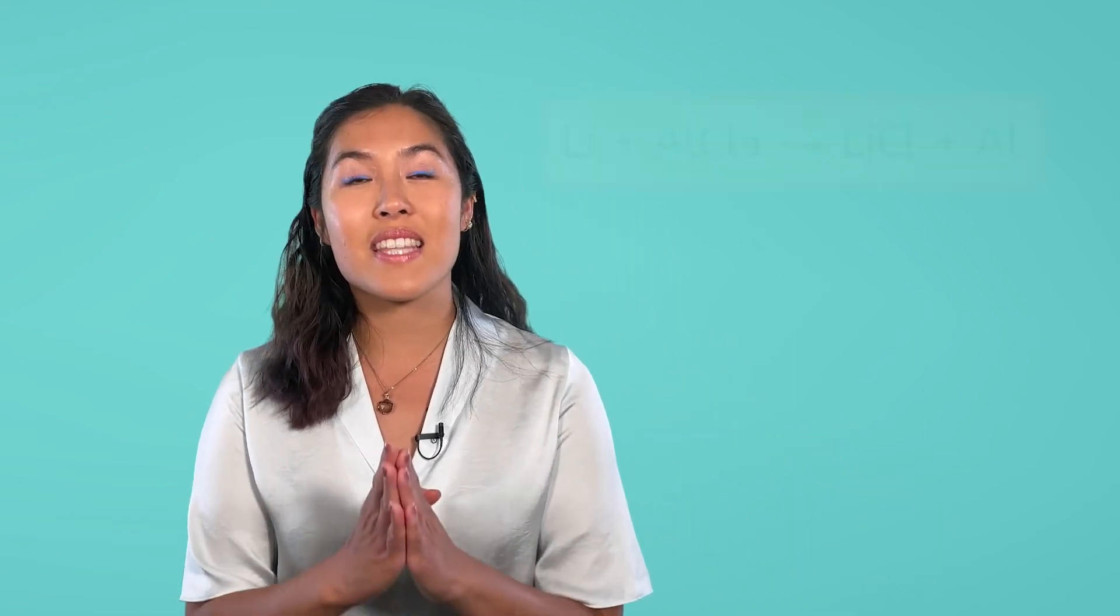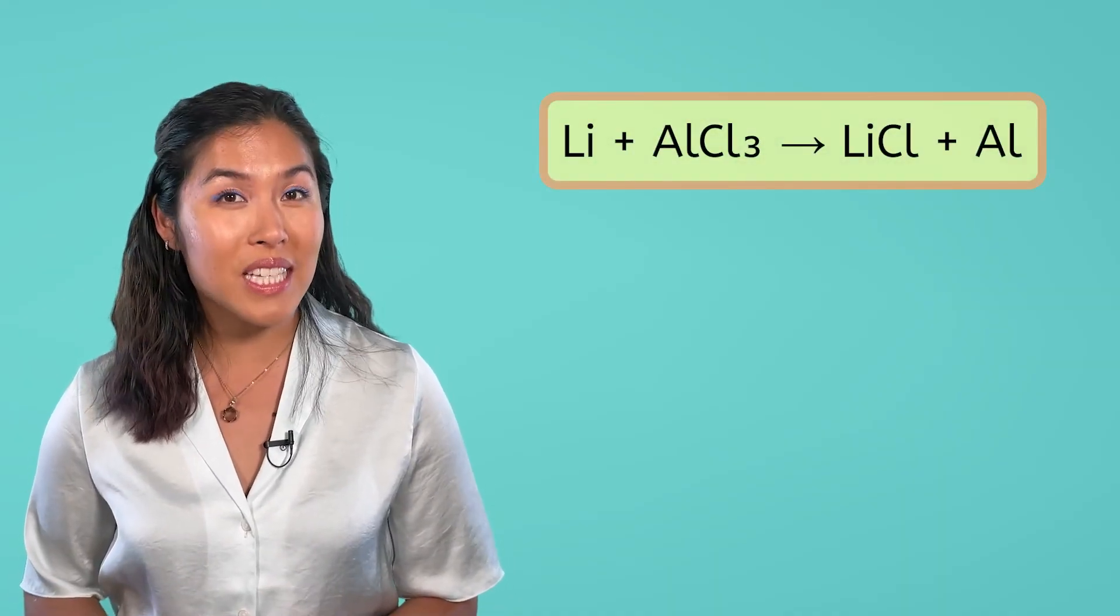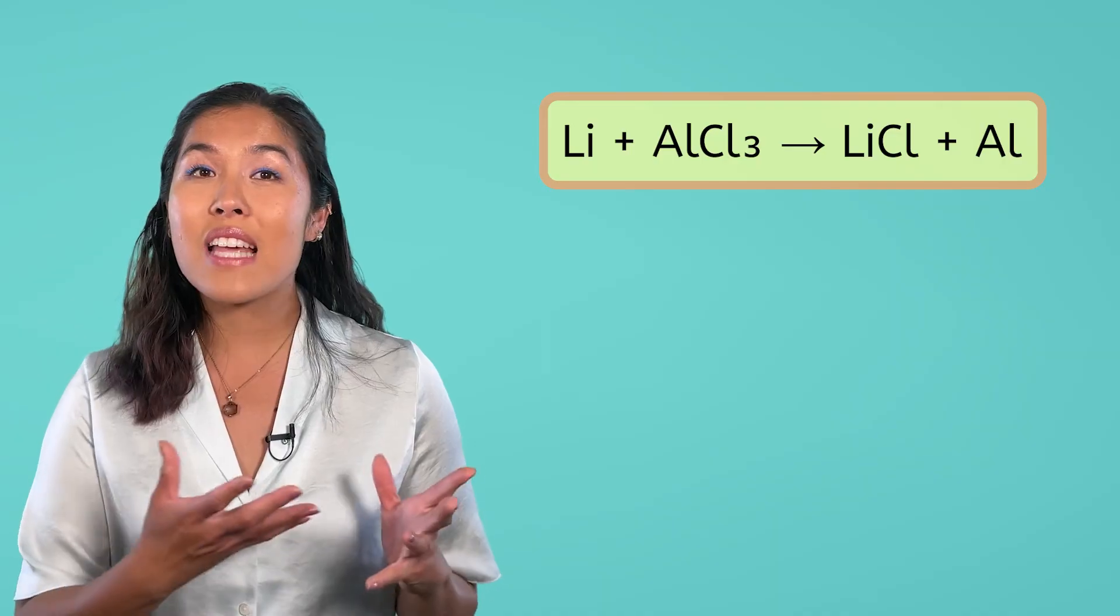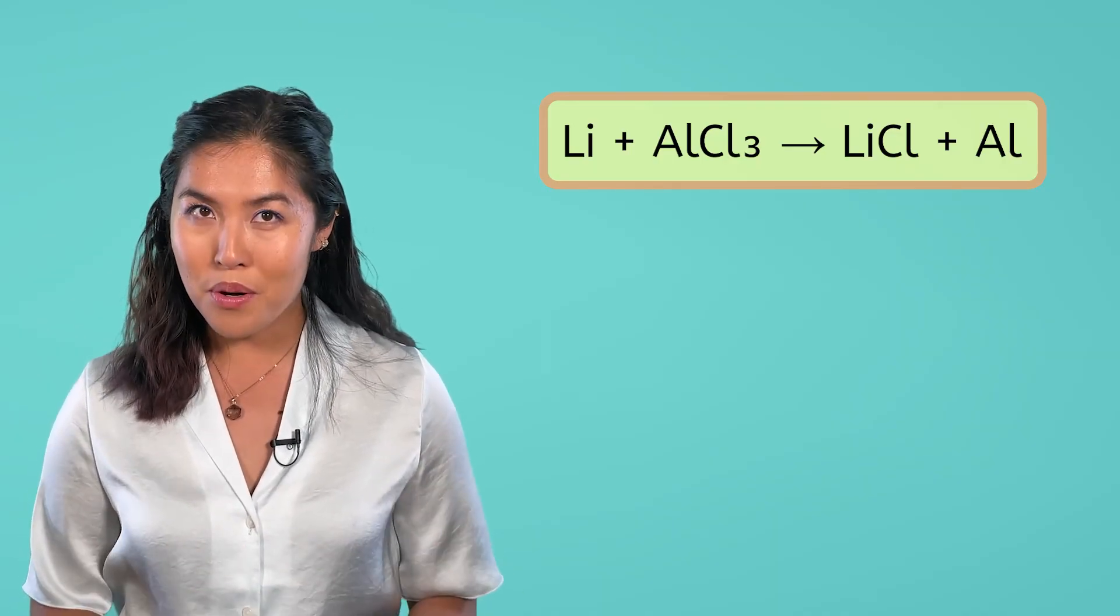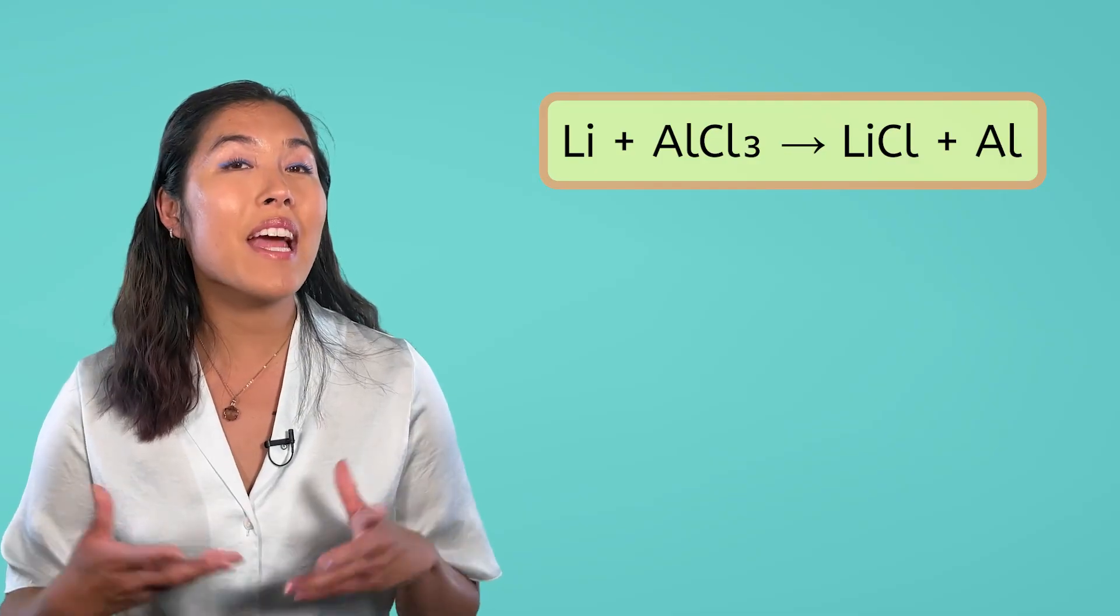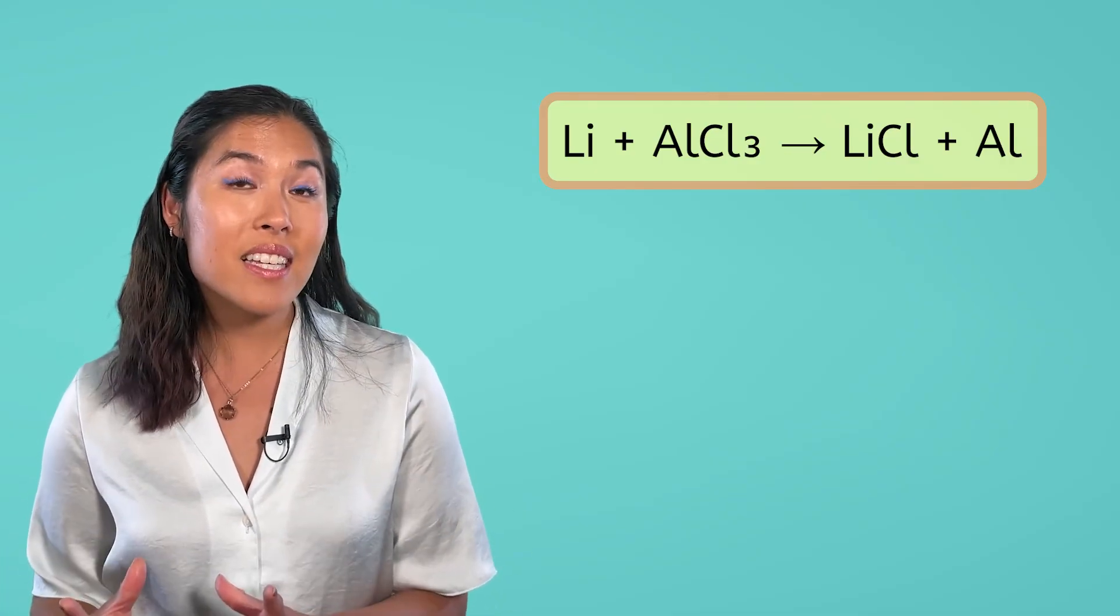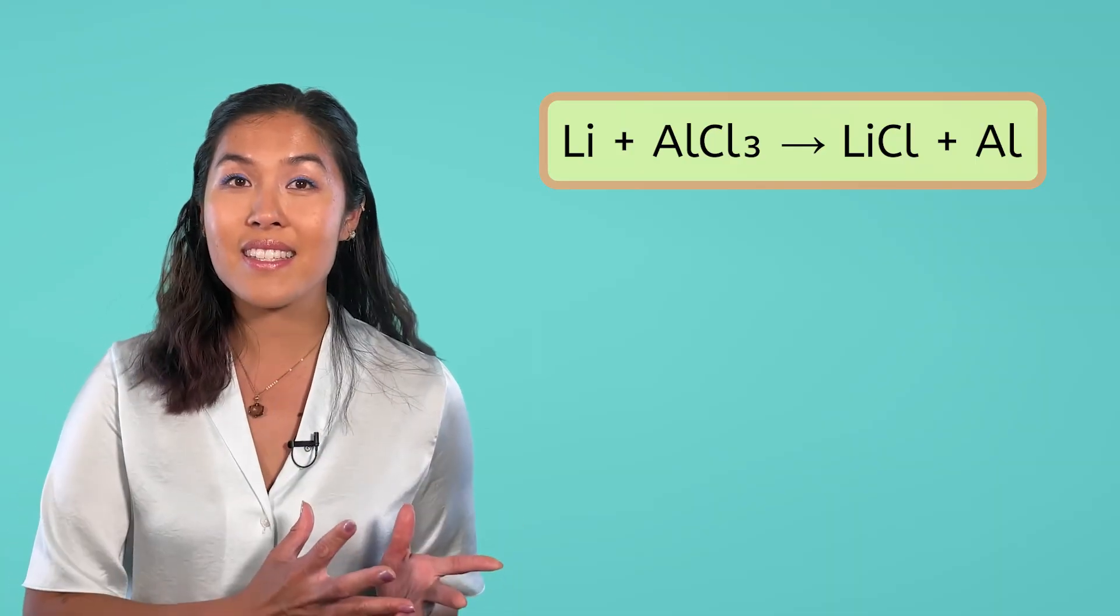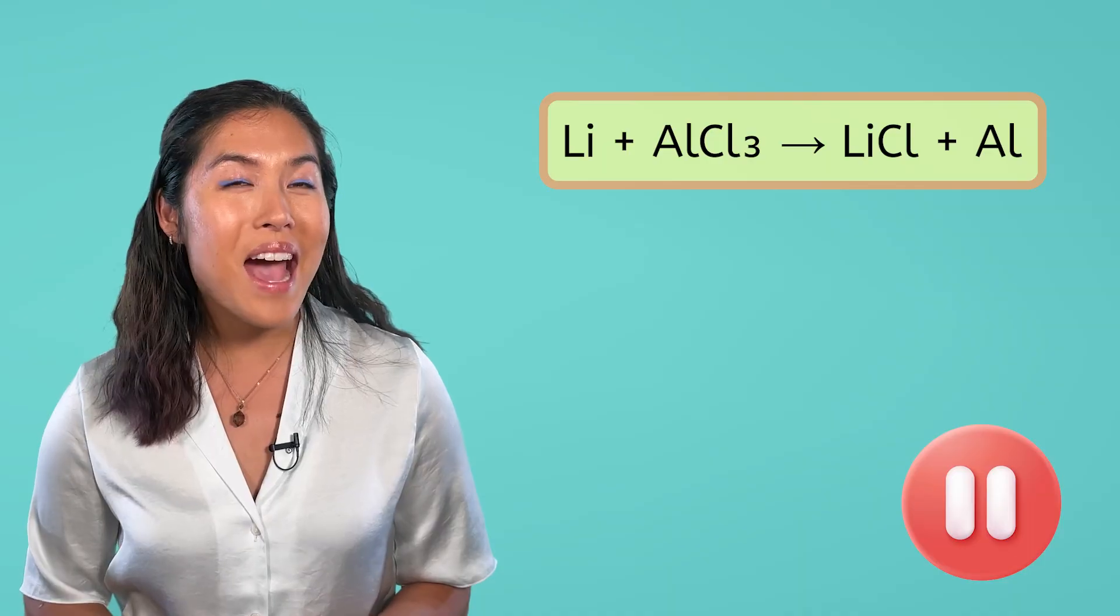Okay, I think you're ready to try one on your own. Try to balance the chemical equation LI plus ALCl3 yields LICL plus AL. Remember, make a list and update it every time you add a coefficient. When your reactant list matches your product list, the equation is balanced. Pause the video and give it a try.